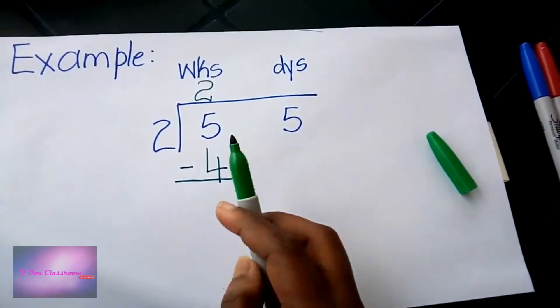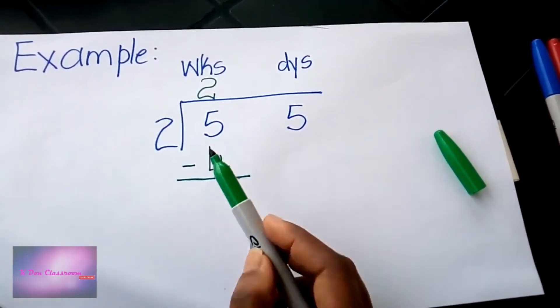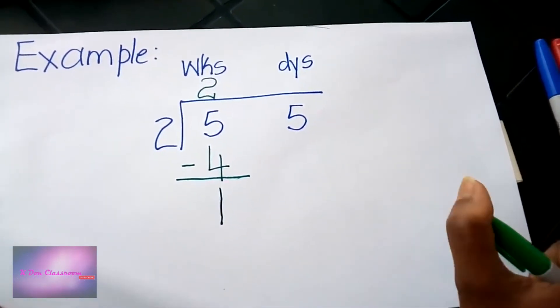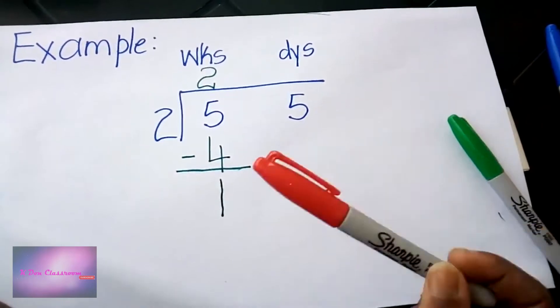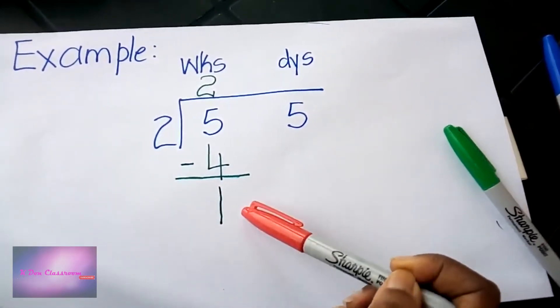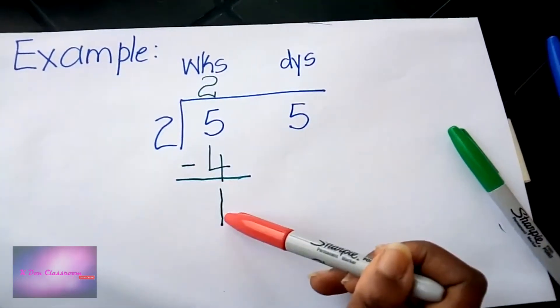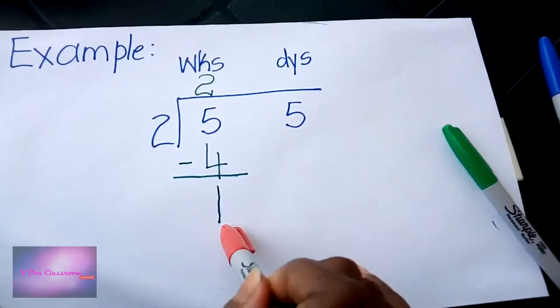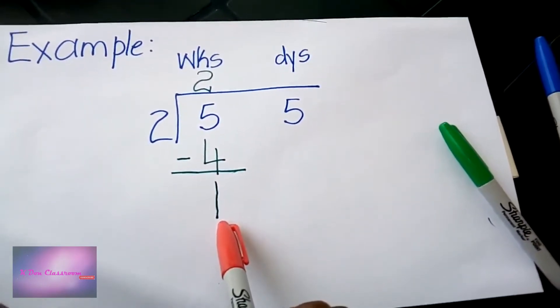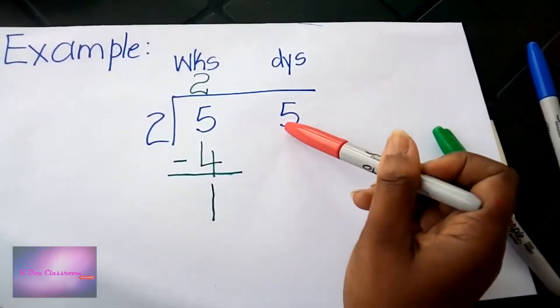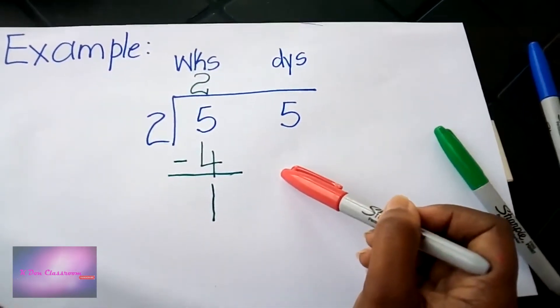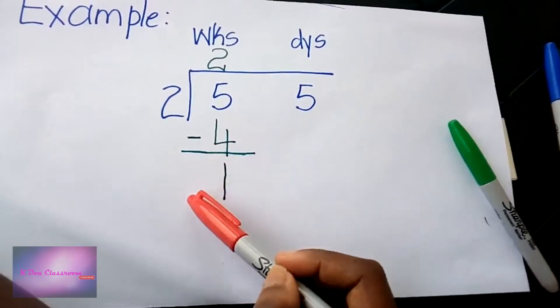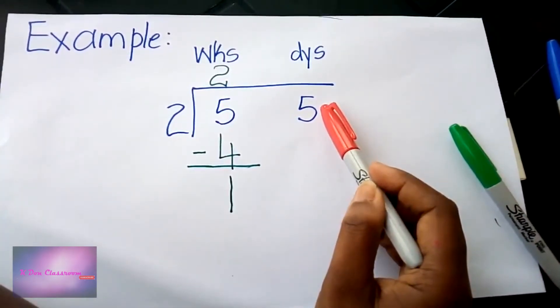Four from five will leave us with one. This one is telling us that I still have one week remaining. I took four weeks out of five weeks and I have one week remaining. Usually in your long division you would bring down this five, but we're not going to do that today.